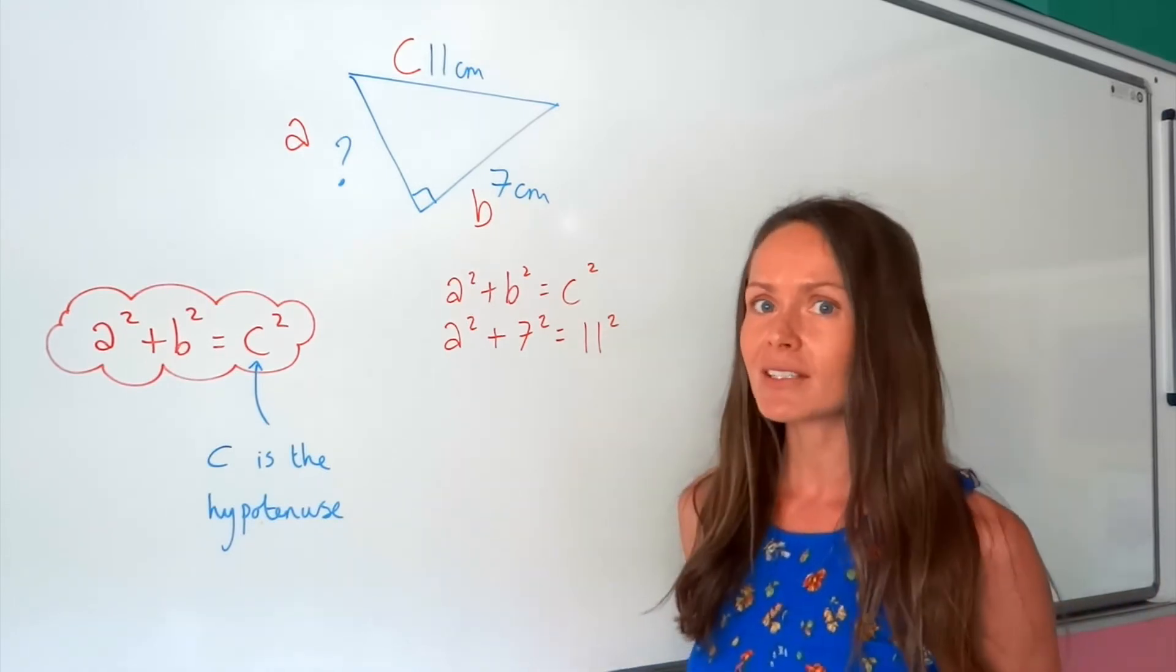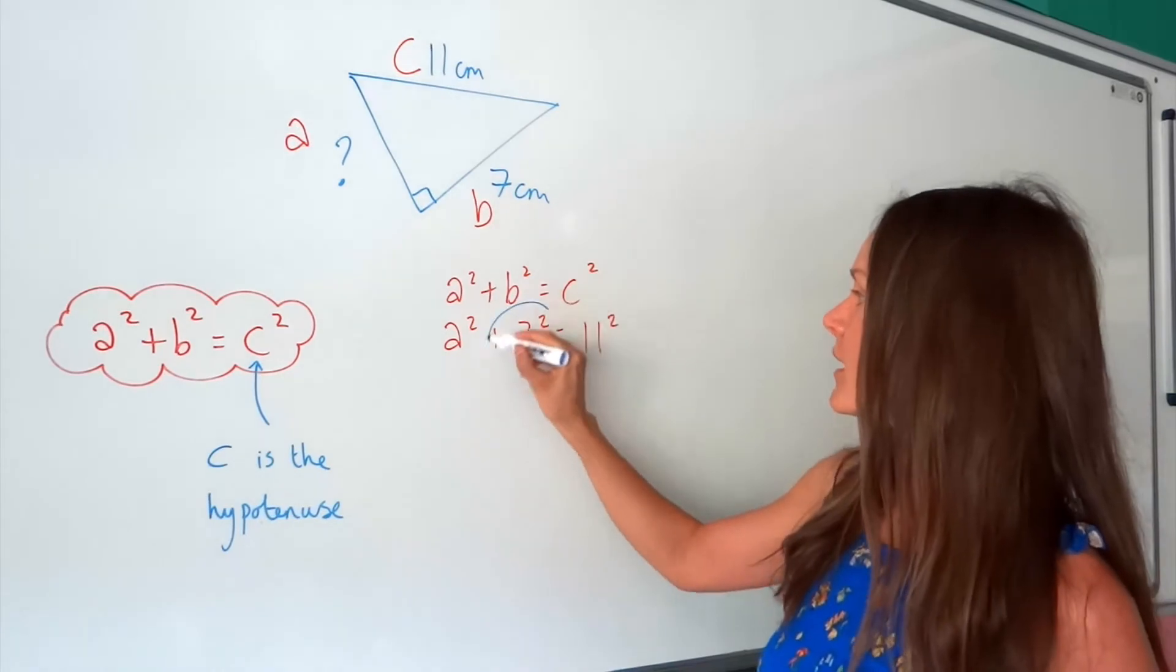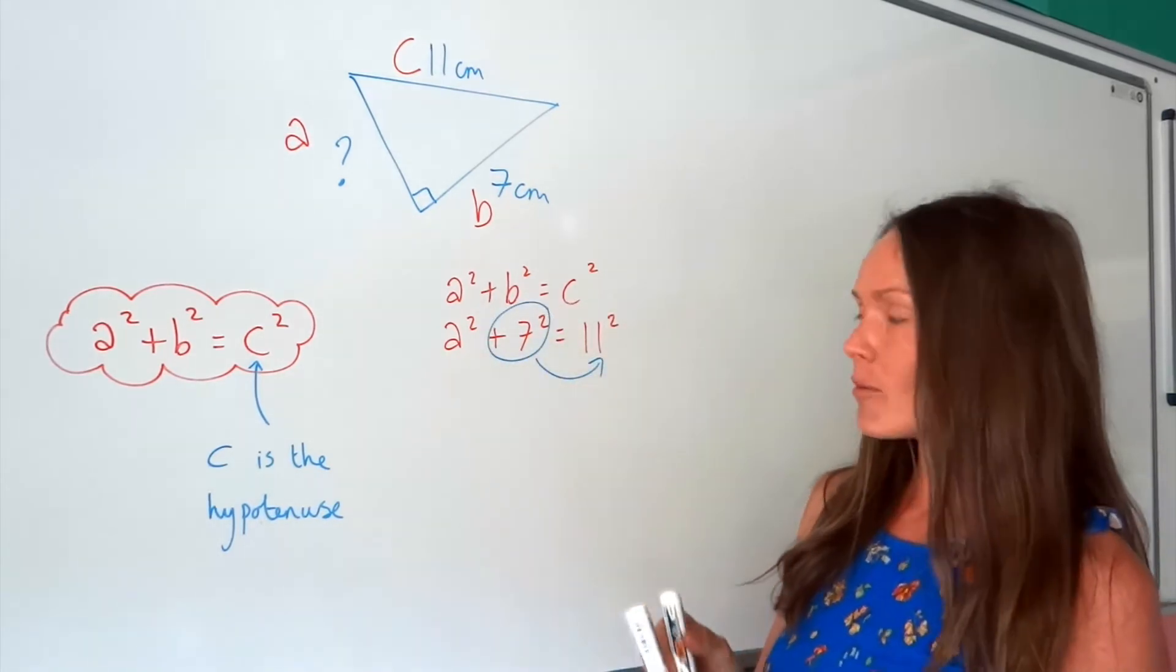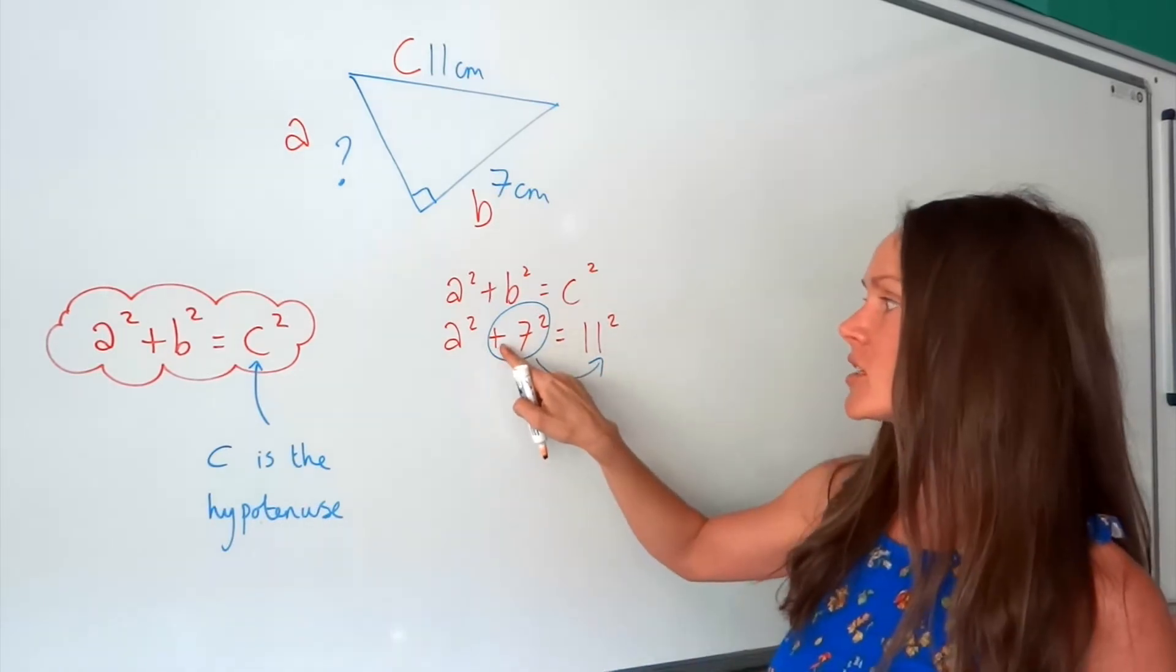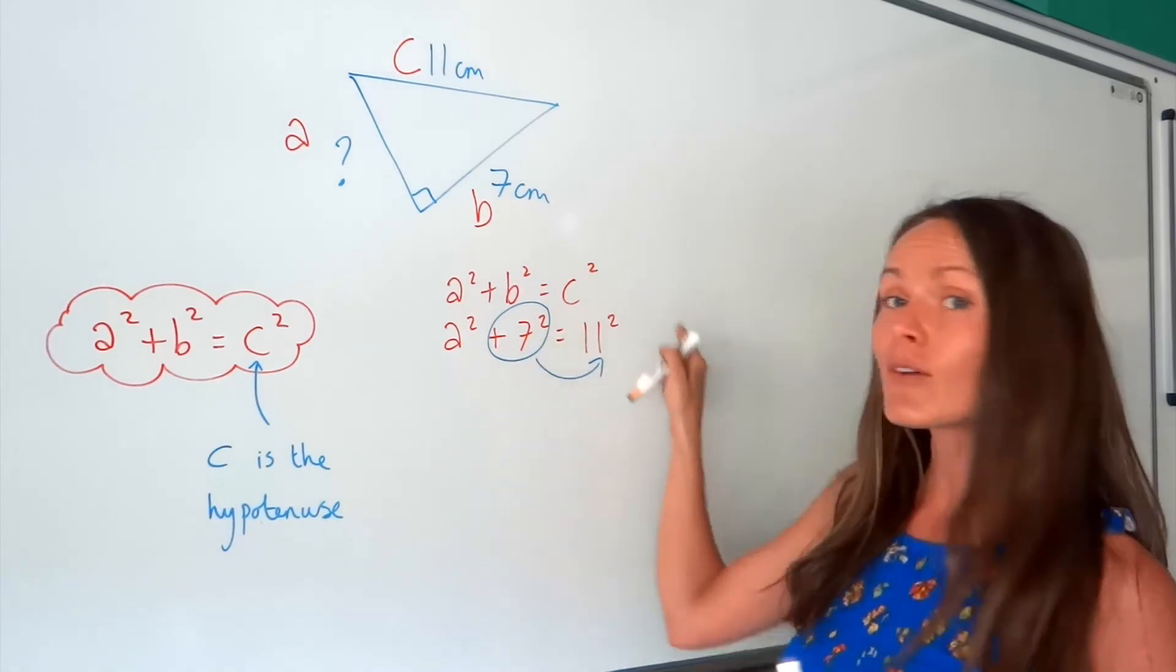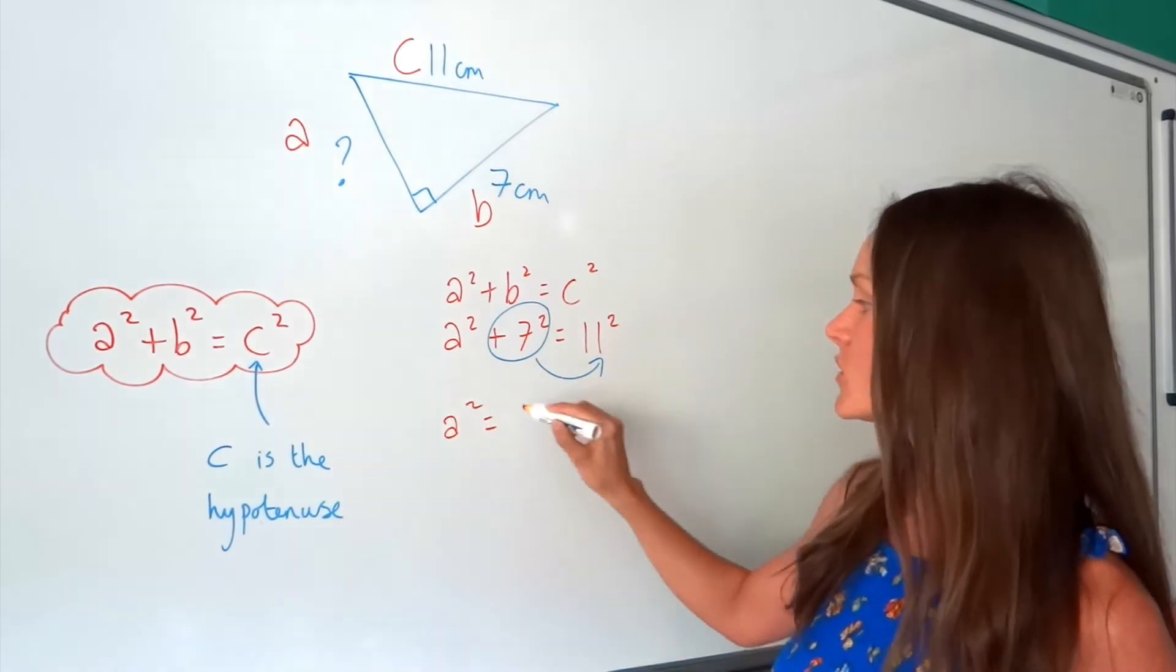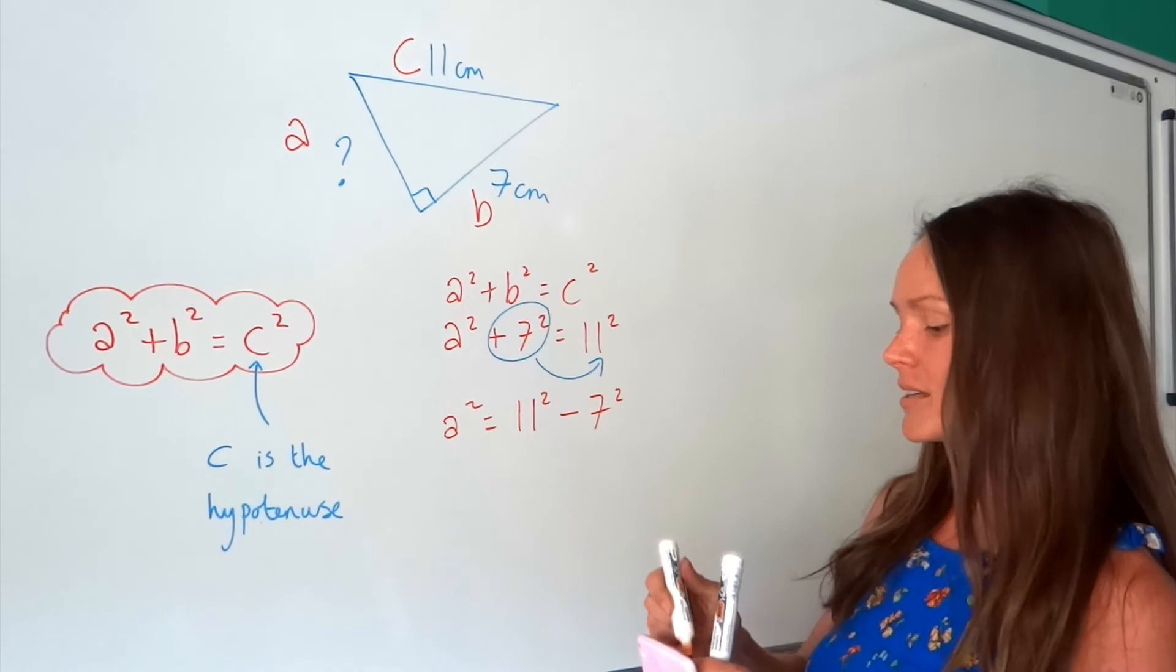So it's just like the previous example, in that we need to move that to the other side, so that A is by itself. So remember, when something moves across the equal sign, it changes sign. So this used to be positive 7 squared, and when it goes over there, it's going to change to a minus 7 squared, but everything else stays the same. So I've still got A squared. 11 squared hasn't changed, because that didn't move either. But this one turns to minus 7 squared.